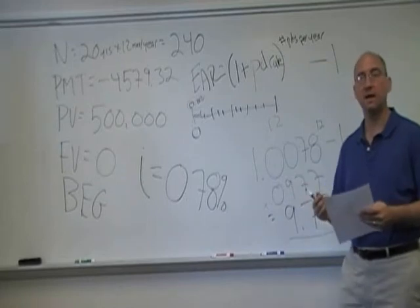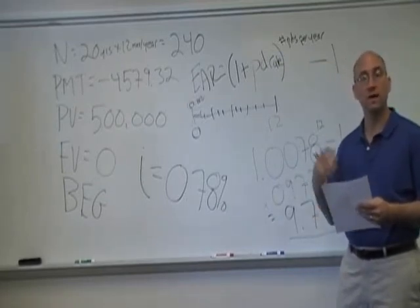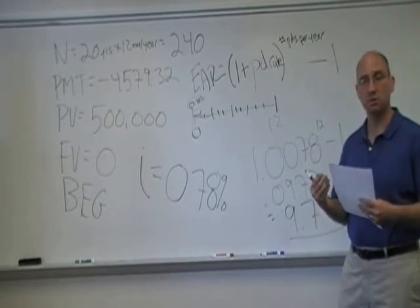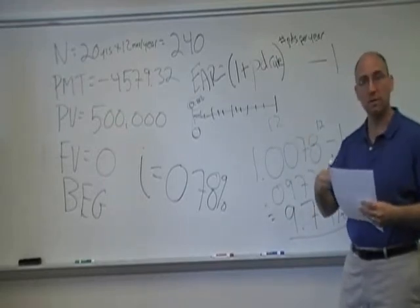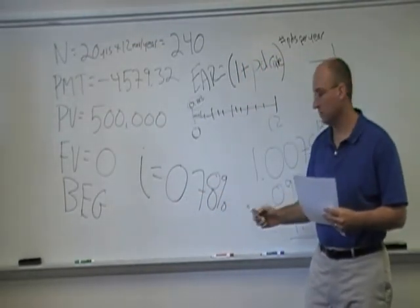So if Dice K had gone to the bank and they said, oh, on your $500,000 loan, we'll give you a loan with an EAR of 9.77%, the monthly payments associated with that, assuming the first payment's due today, would be $4,579.32.